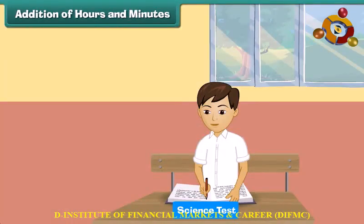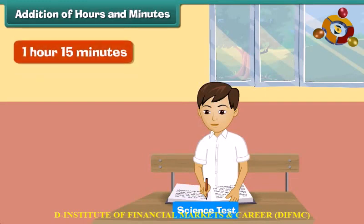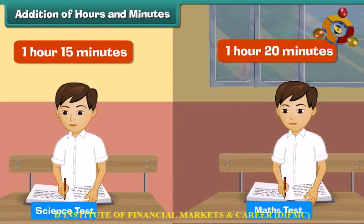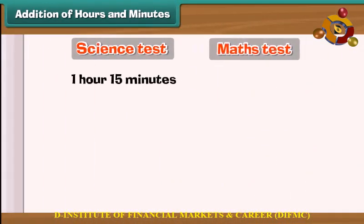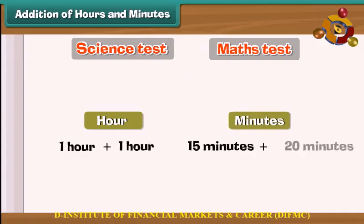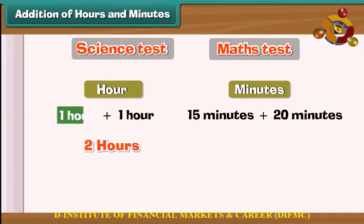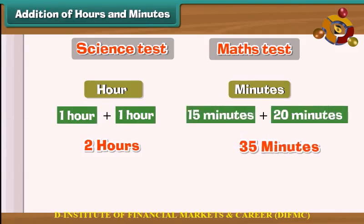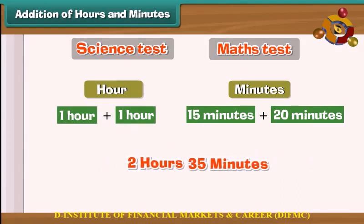Addition of hours and minutes. Let us now learn to add 2 times. Raju completes his science test in 1 hour 15 minutes and his maths test in 1 hour 20 minutes. What is the total time taken by Raju to write the 2 tests? We add the hours together and the minutes together: 1 plus 1 equals 2 hours, and 15 plus 20 equals 35 minutes. So the total time taken by Raju is 2 hours 35 minutes.